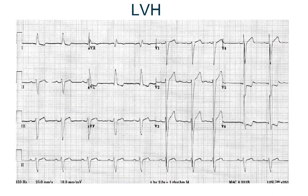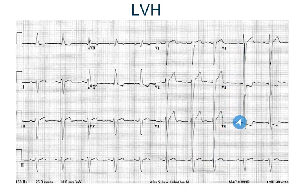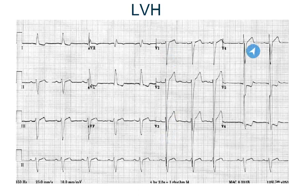Now if you compare this ECG of LVH with the previous one, look at the R wave — it's small in V1, then it starts becoming taller. When it comes to V5 and V6, it becomes so tall that it actually somewhat fuses with the S wave of the upper lead. If you look at the S waves from V1 to V6, they decrease in size but are deeper compared to a normal ECG.